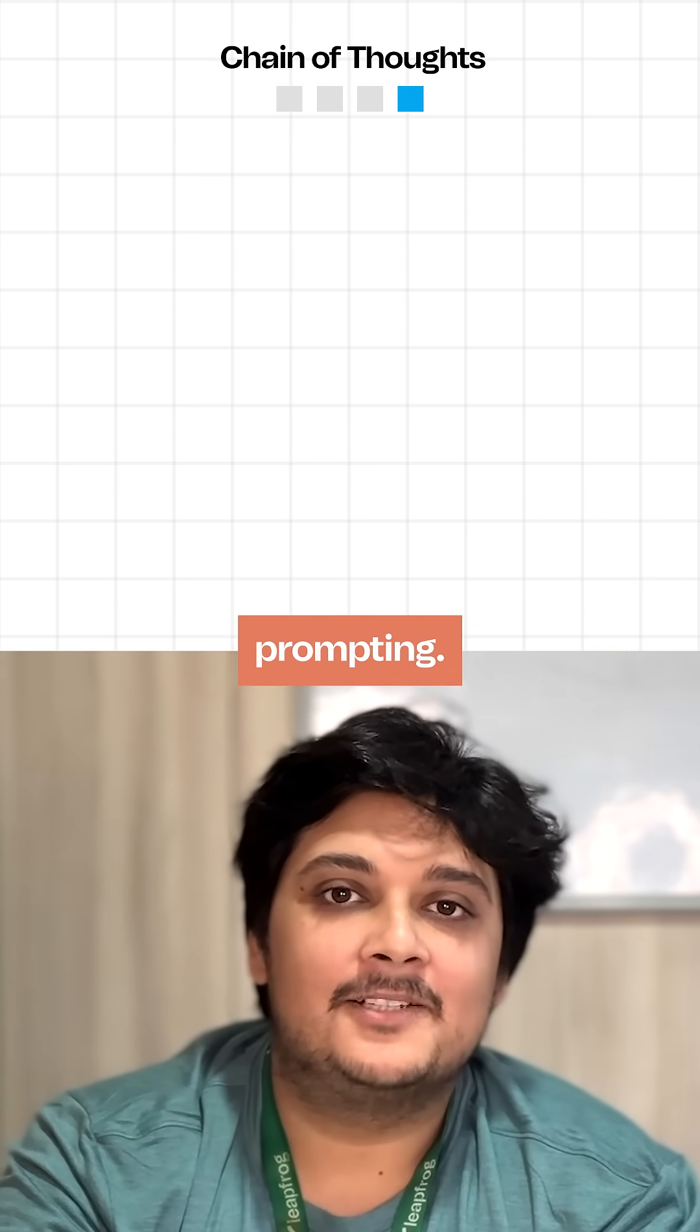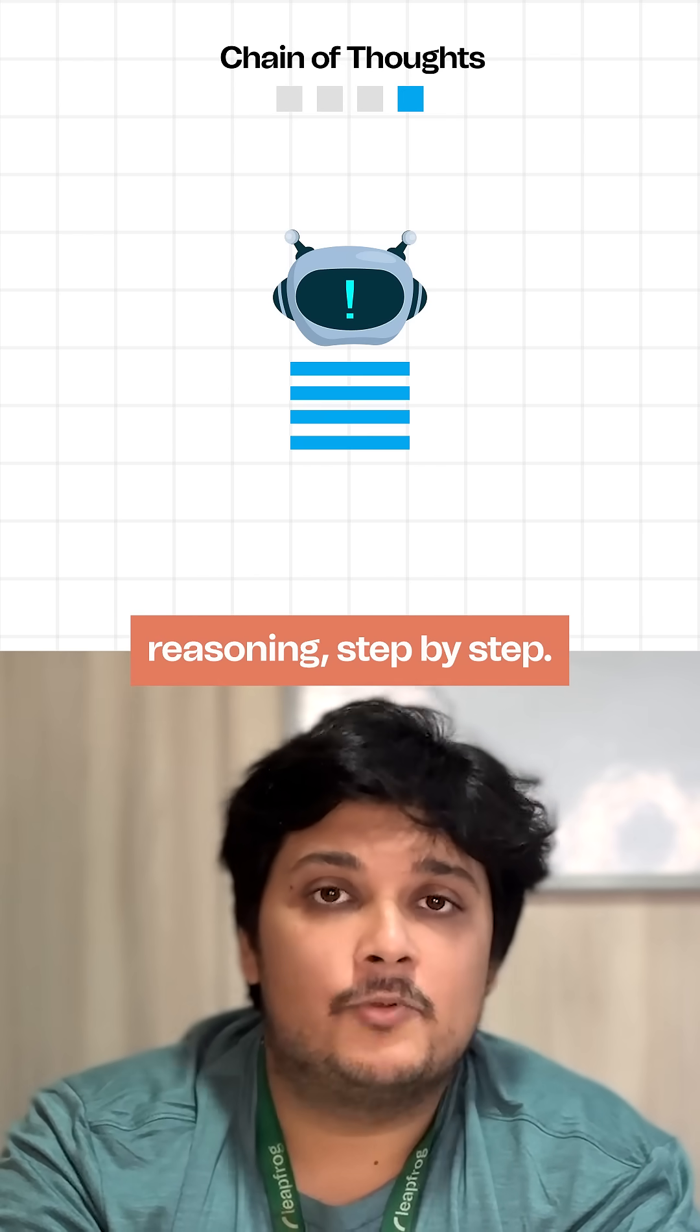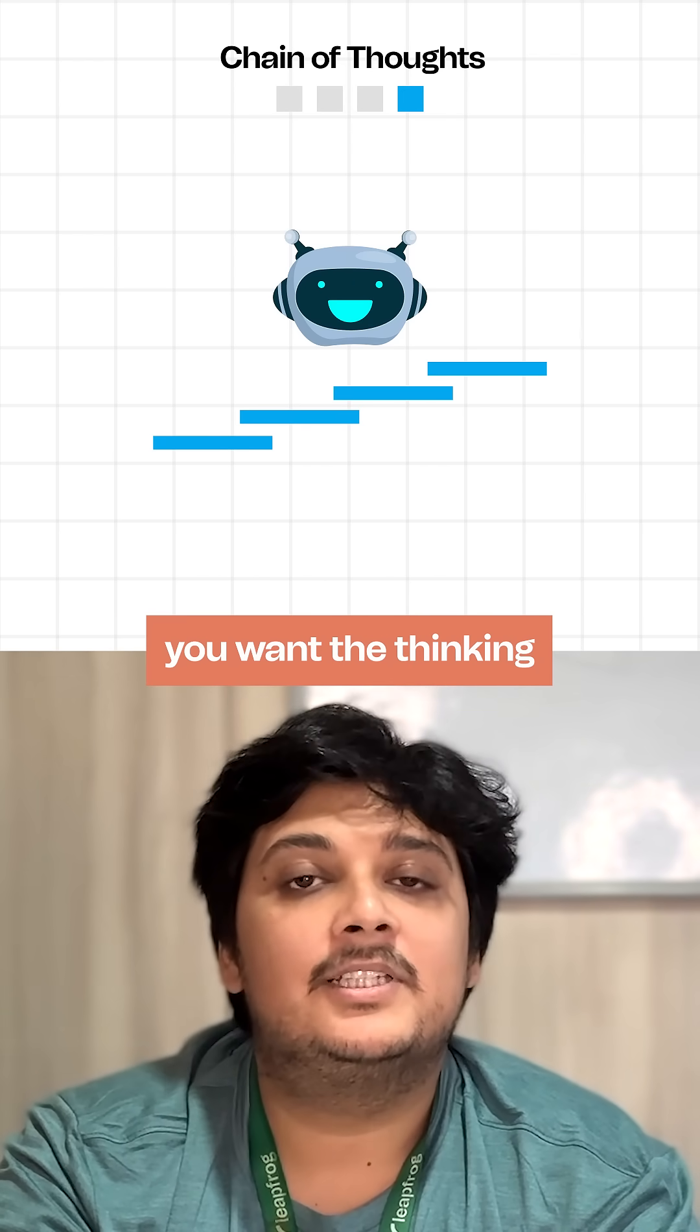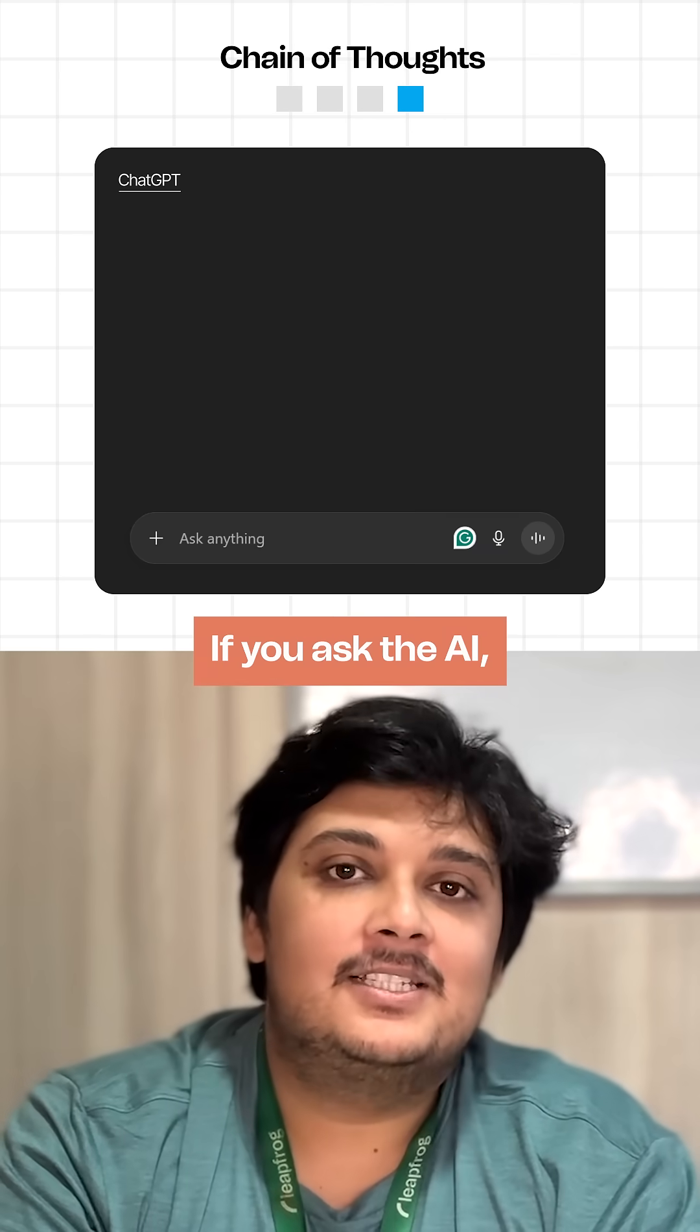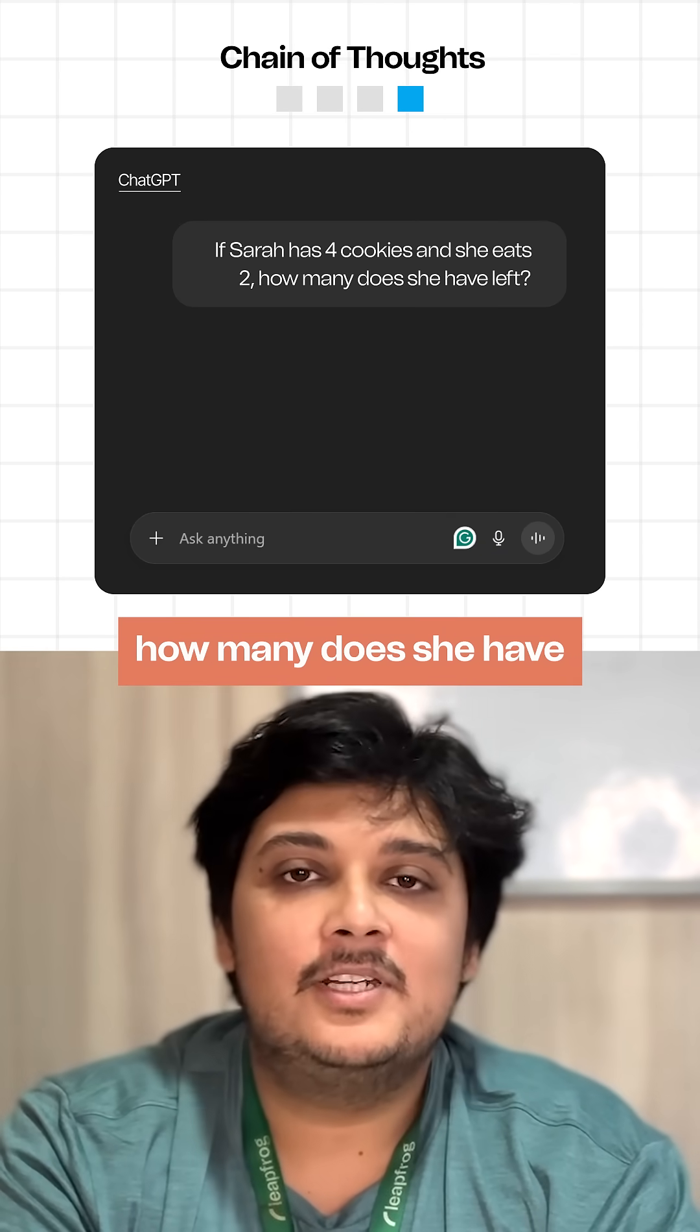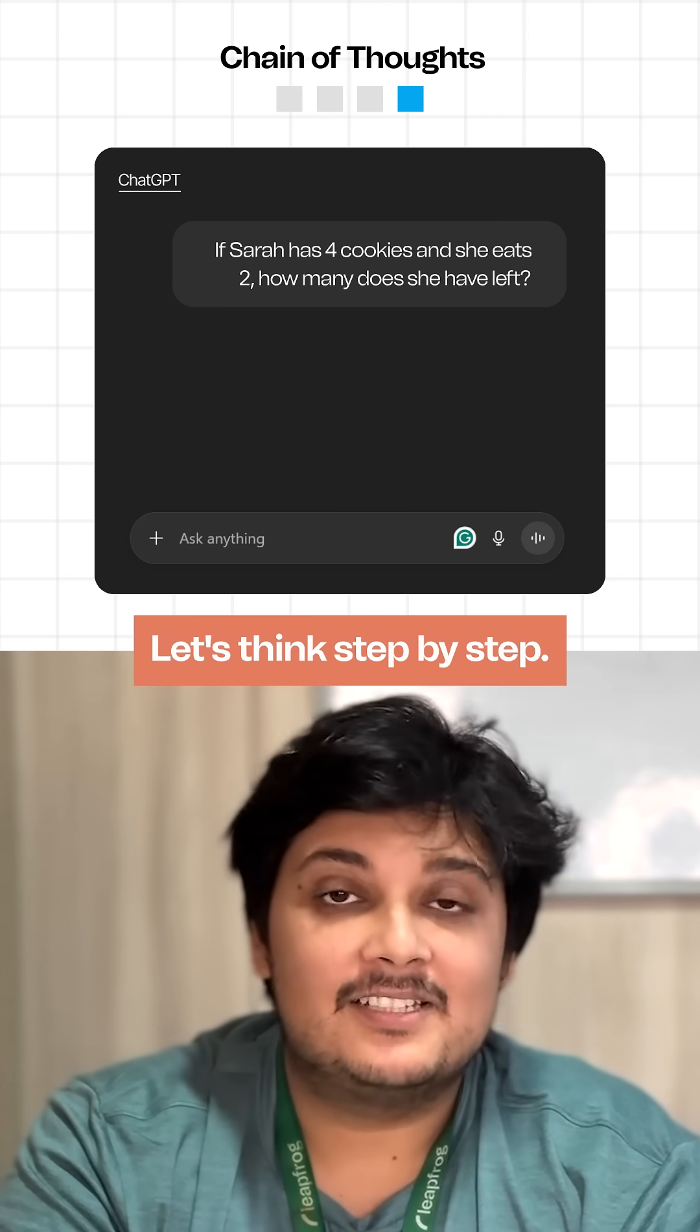Now finally, there is chain of thoughts prompting. This is where you ask the AI to show its reasoning step by step. You are not just looking for the answers. You want the thinking behind it. If you ask the AI, if Sara has 4 cookies and she eats 2, how many does she have left? Let's think step by step.